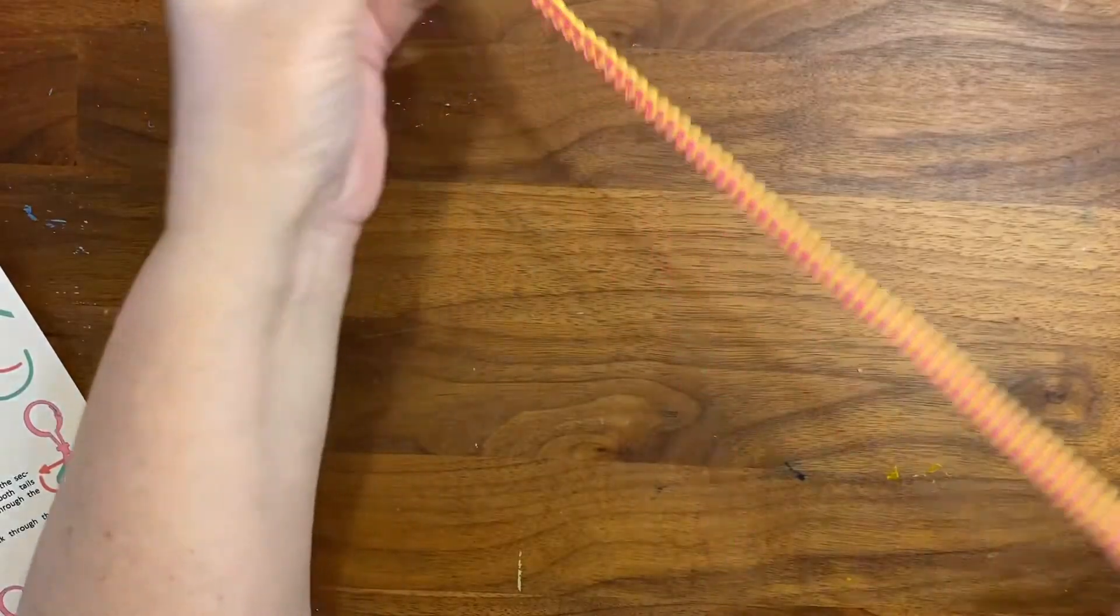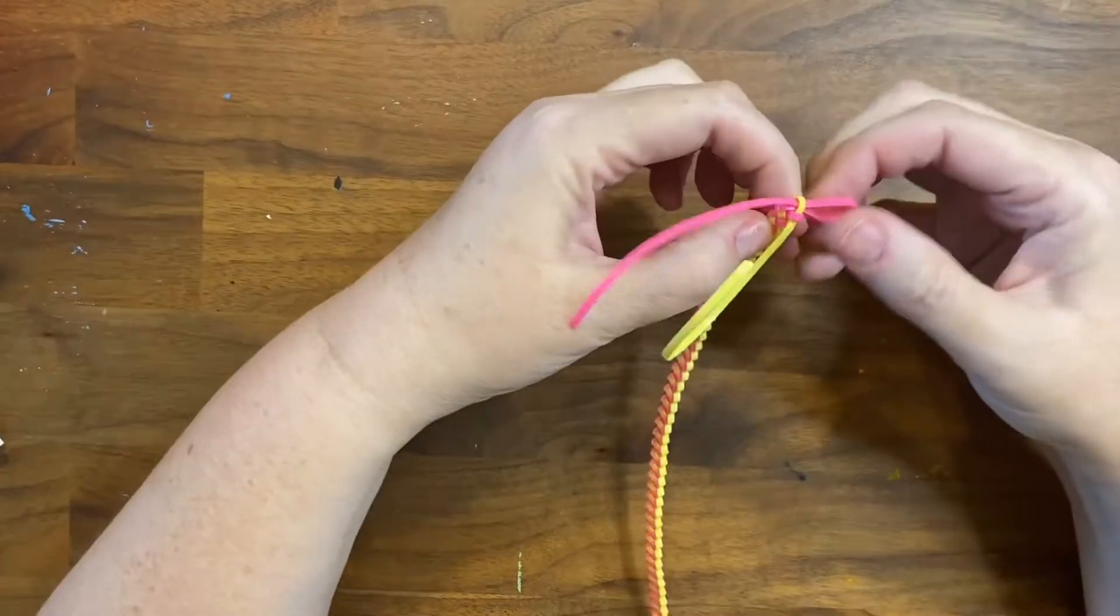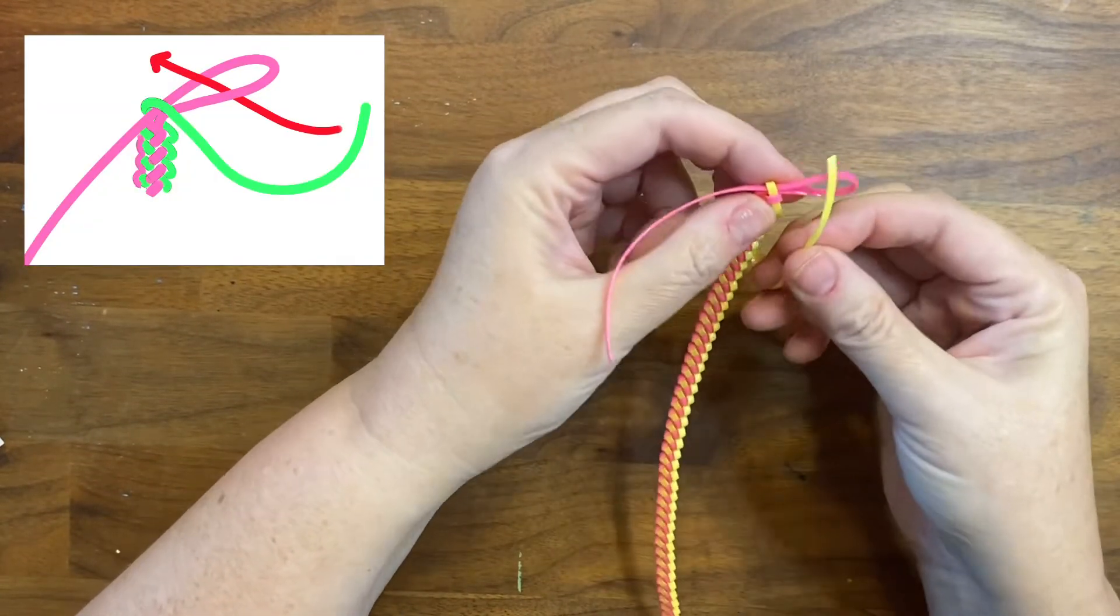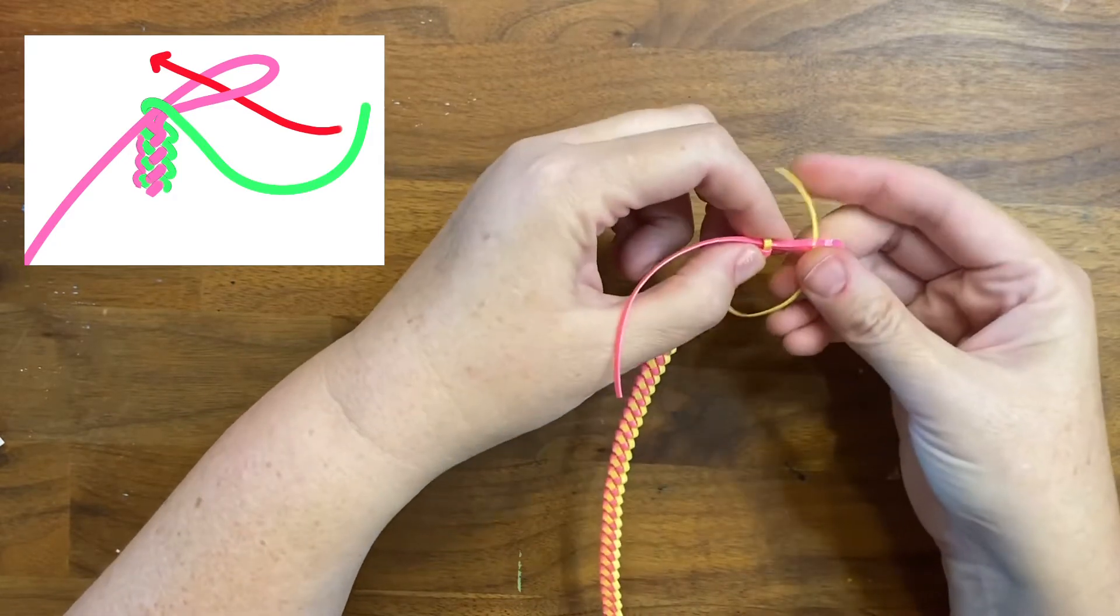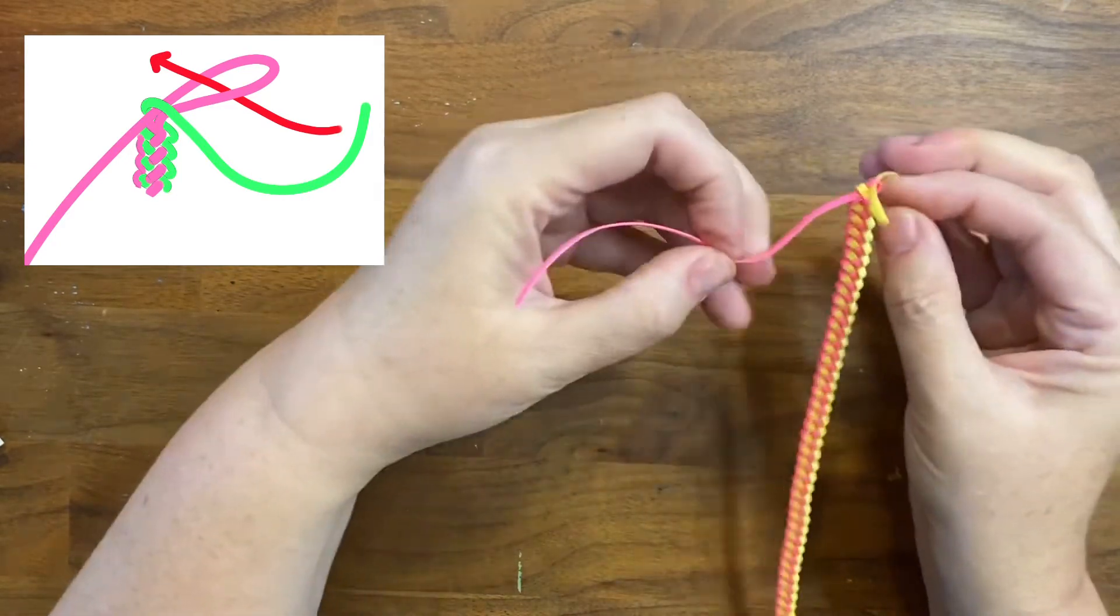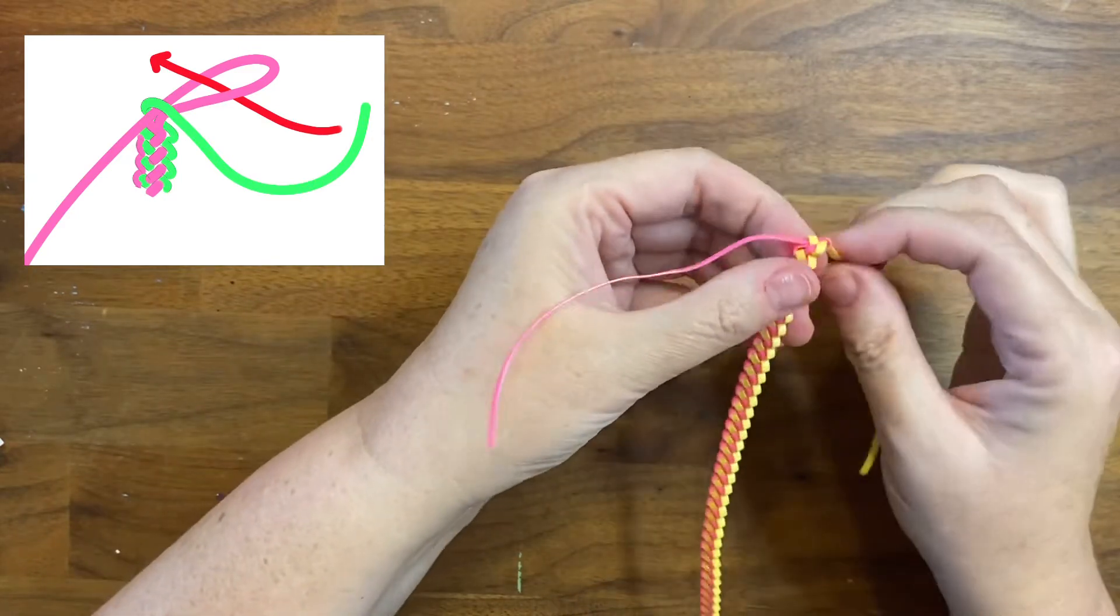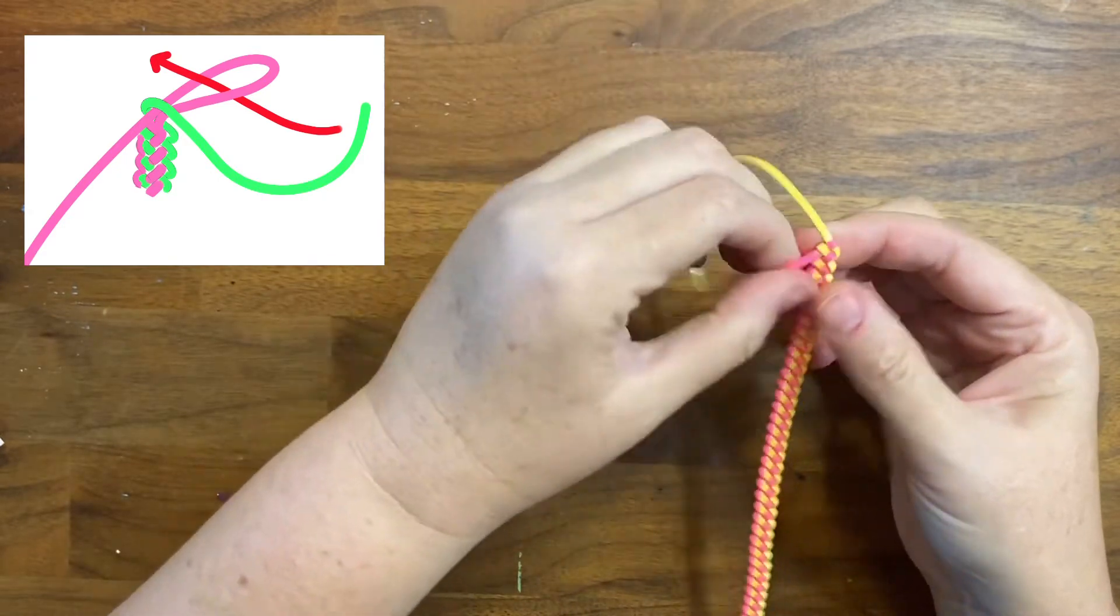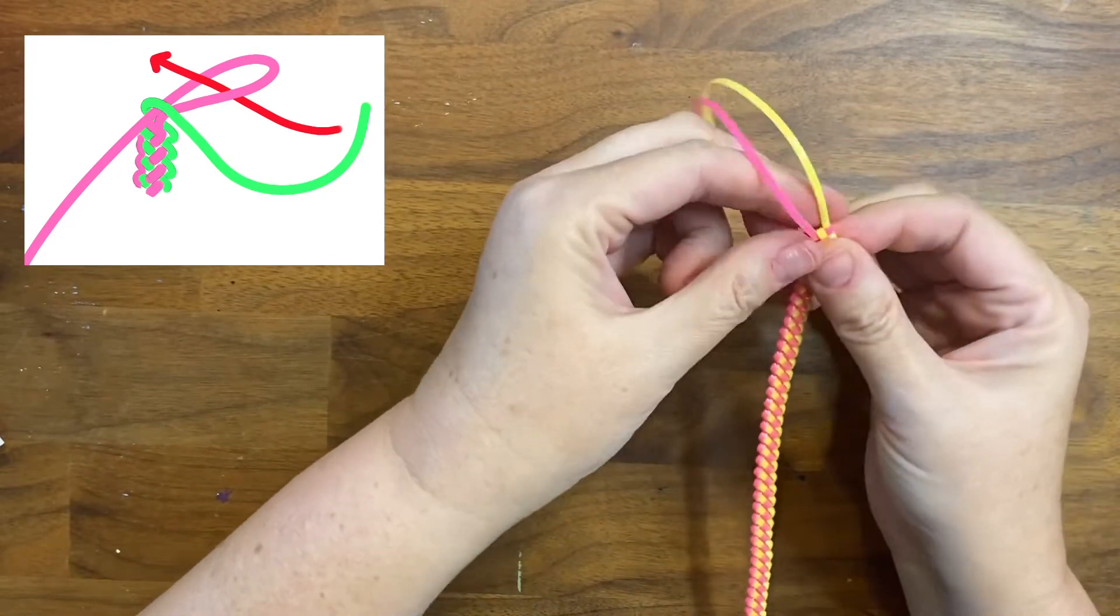And once you've completed most of the stitches your project should look something like this and you want to make one last loop and then put the opposite color strand through the loop to tie off the project. If you want to you can also do an overhand knot but at this point the project is secure.